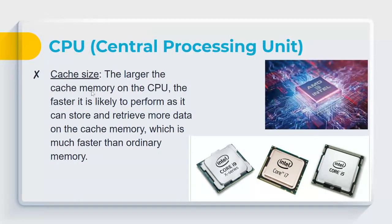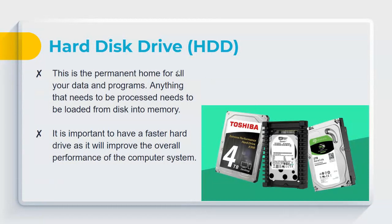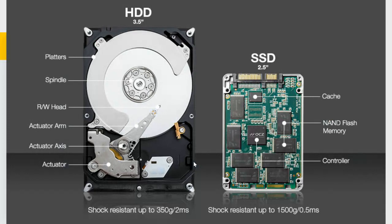Larger cache memory on the CPU means faster performance, as it can store and retrieve more data quickly. A hard disk drive (HDD) is the permanent home for all your data and programs; a fast hard drive improves overall system performance. Solid-state drives (SSDs) are much faster than HDDs — if you have the option, choose an SSD. Desktop PCs can have both: one SSD for the OS and one HDD for file storage. HDDs are mechanical and can be damaged by dropping; SSDs are electronic and more durable.